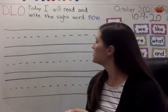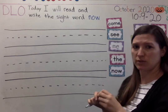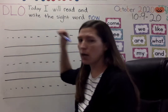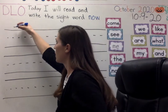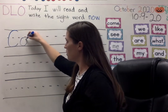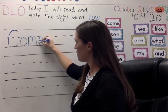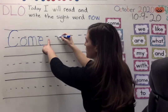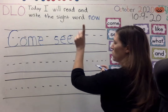We're going to start with 'come.' I can't see them very well, so I'll lean back and write it. Come — C-O-M-E — come. I know when I start my sentence, I start at the top on the left with a capital letter. C-O-M-E, come. C-O-M-E. See — S-E-E, S-E-E — finger space. Come — C-O-M-E — finger space.